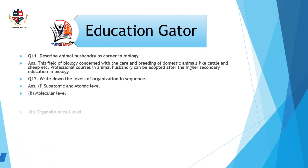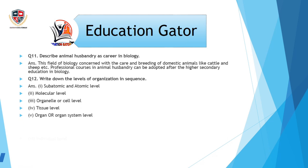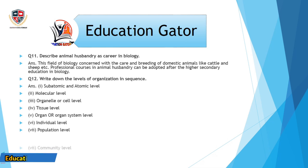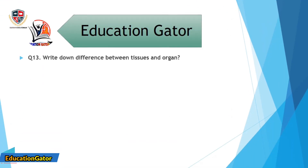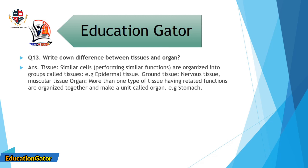Question number 12: Write down the levels of organization in sequence. Ans. Subatomic and atomic level, molecular level, organelle or cell level, tissue level, organ or organ system level, individual level, population level, community level, biosphere level.